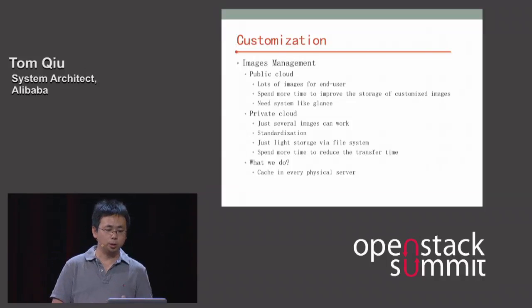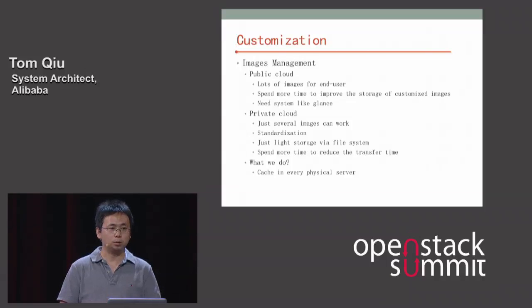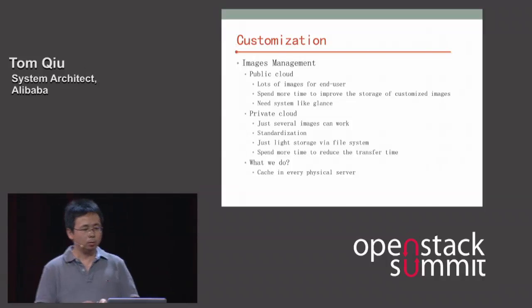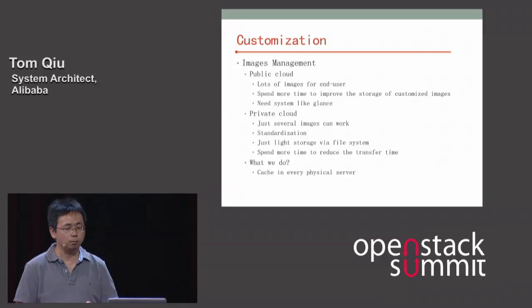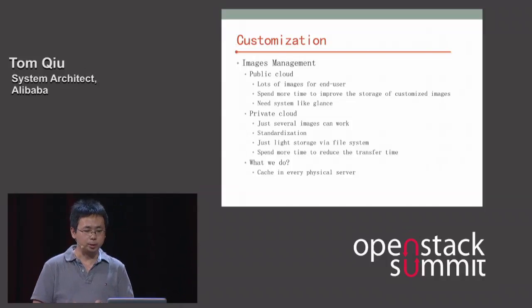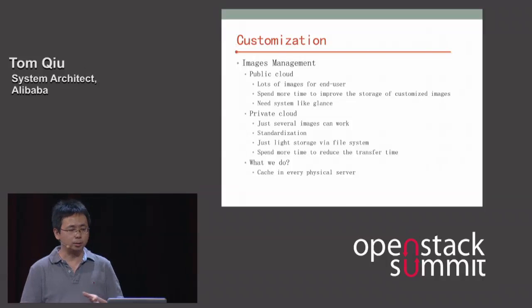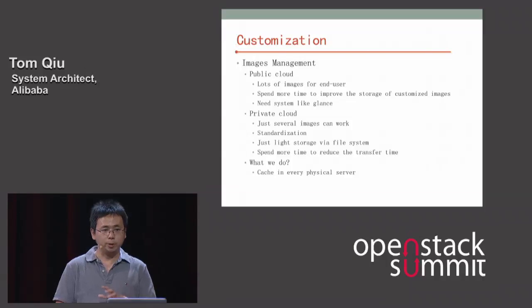Now let's look at image management — an important difference between public and private cloud. Public cloud may have many images since each end user wants their own, requiring heavy storage systems like OpenStack Glance. On the other hand, private cloud has only a few images because operating systems within a company are more standardized, so a lightweight storage system suffices. We simply use the file system. However, the private cloud must focus on reducing image transfer time since efficiency is critical.